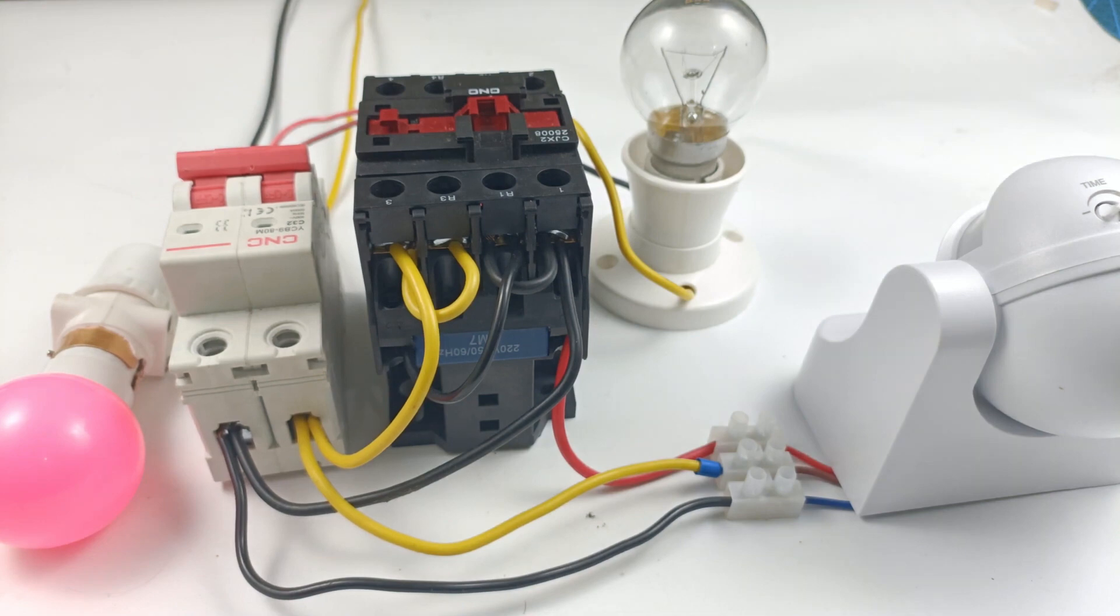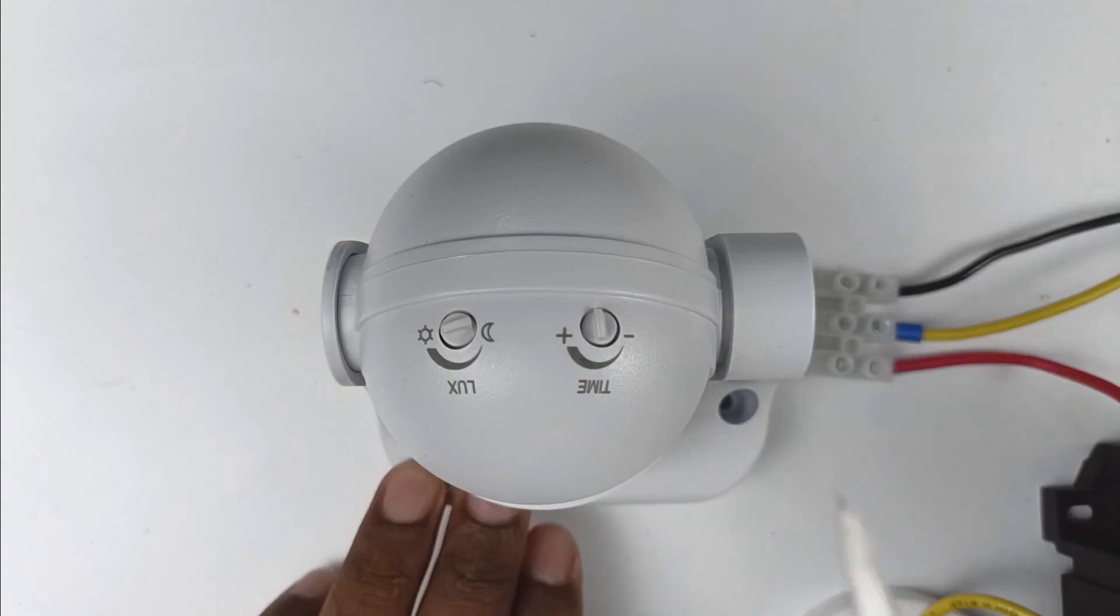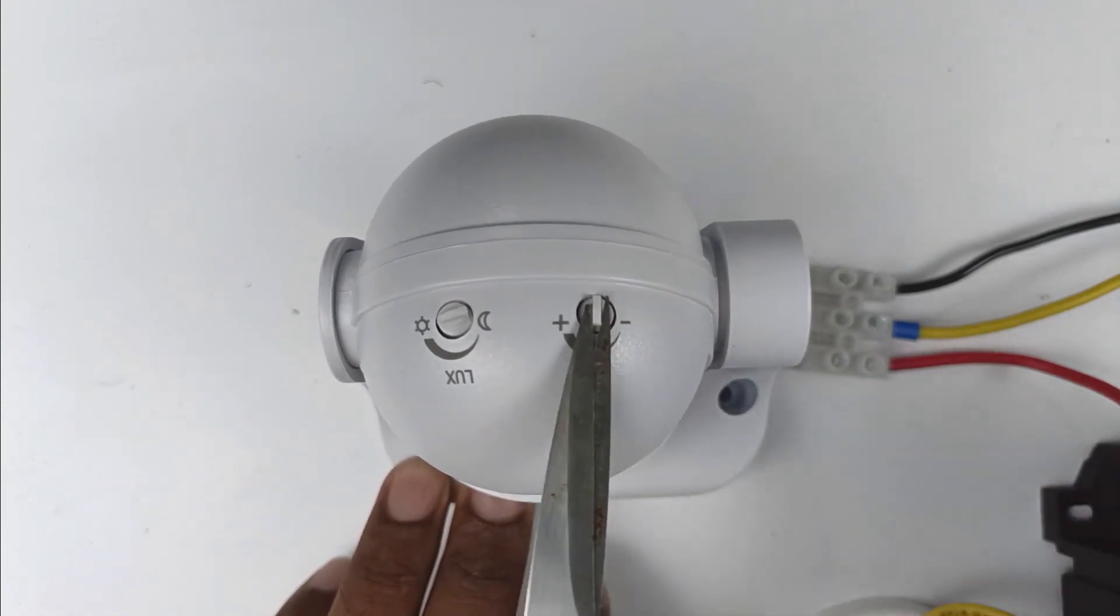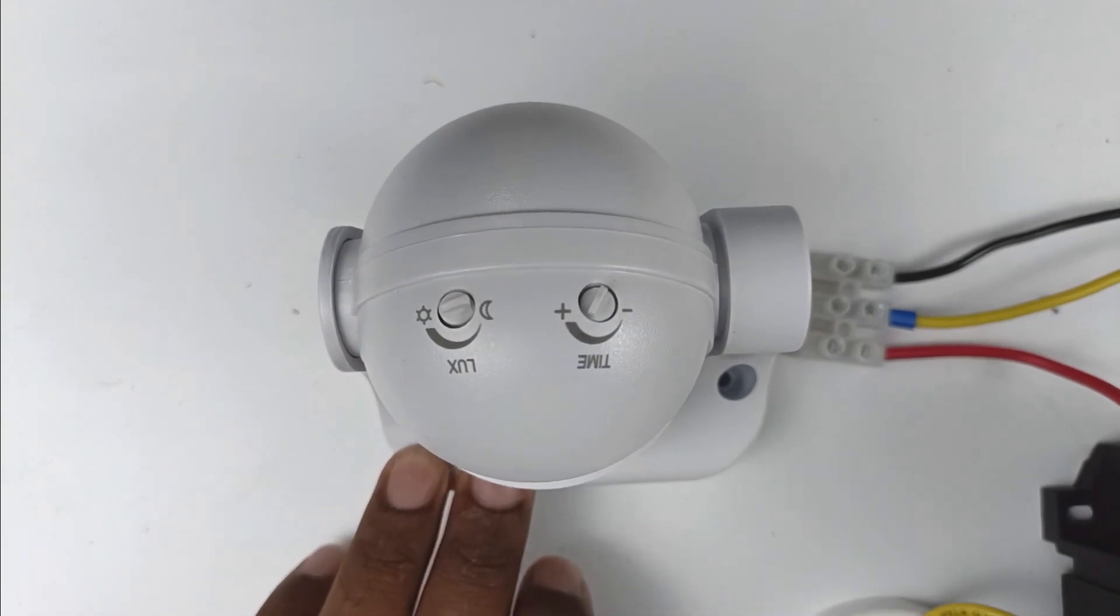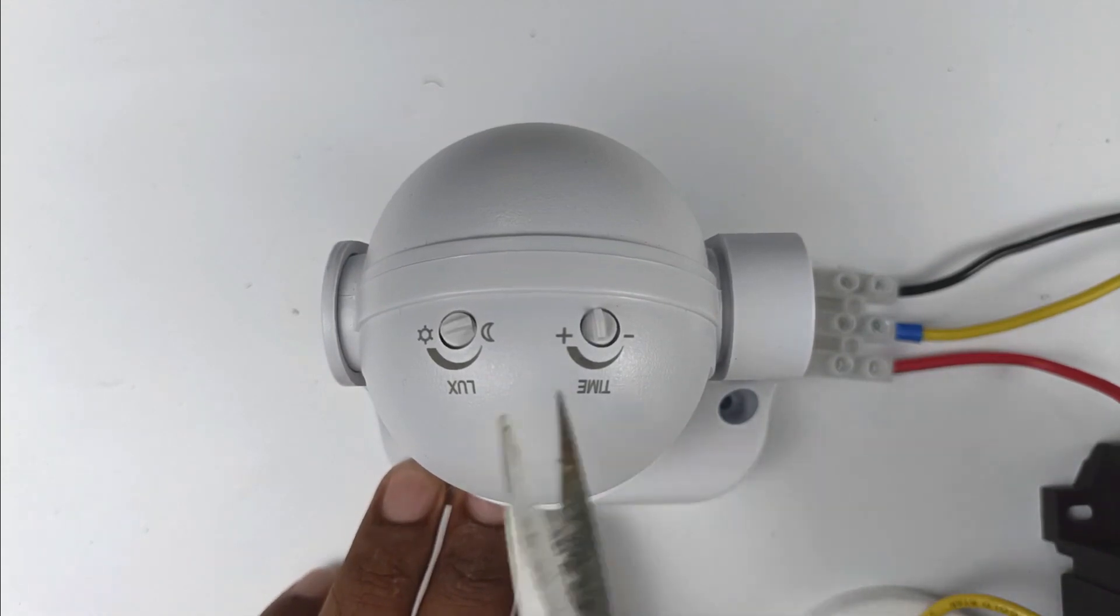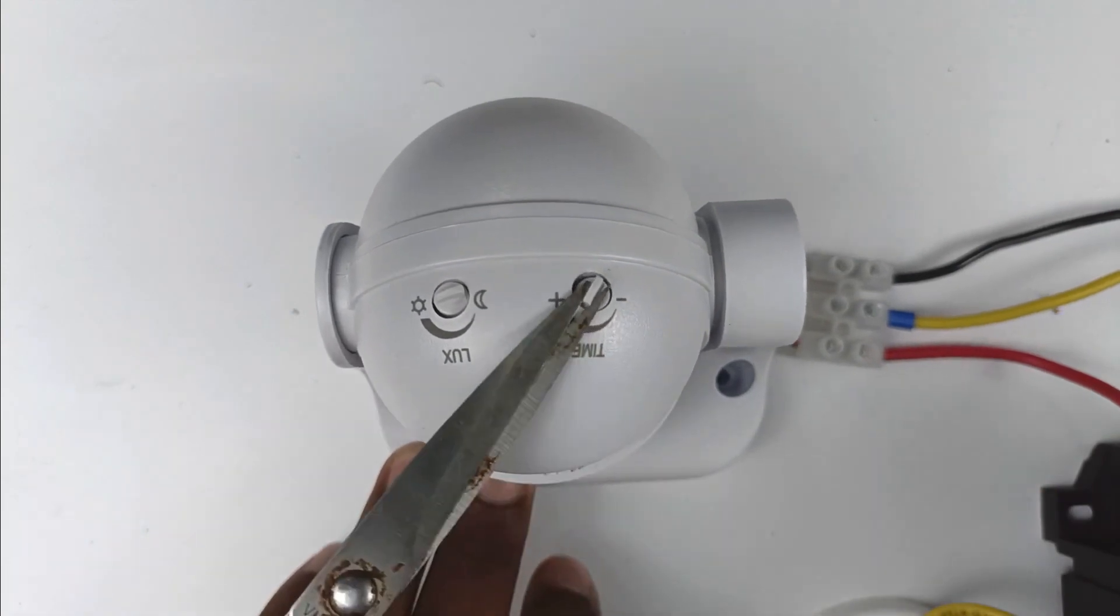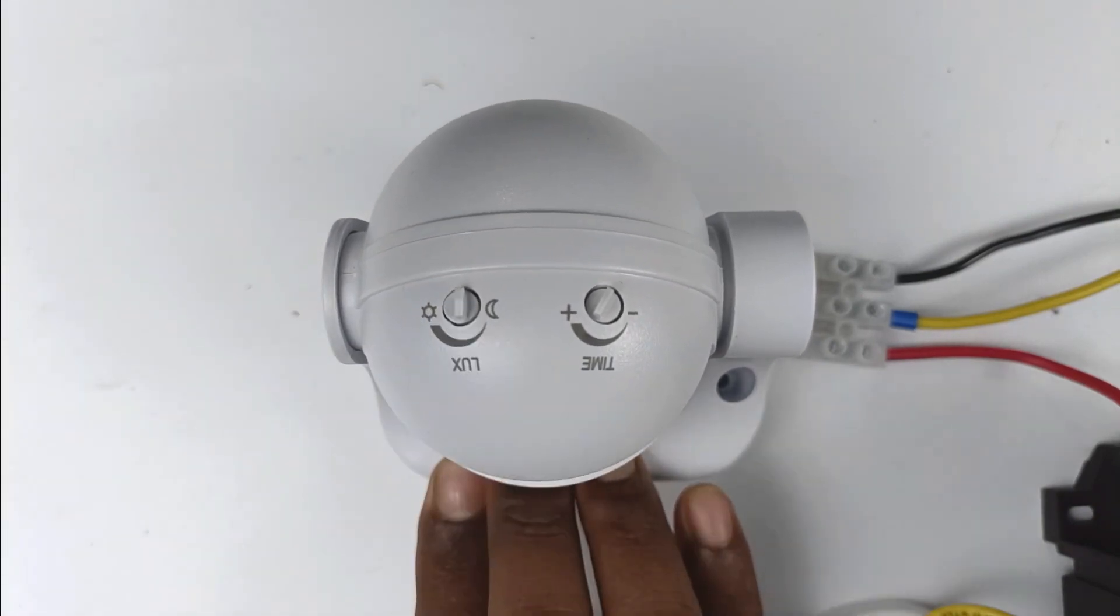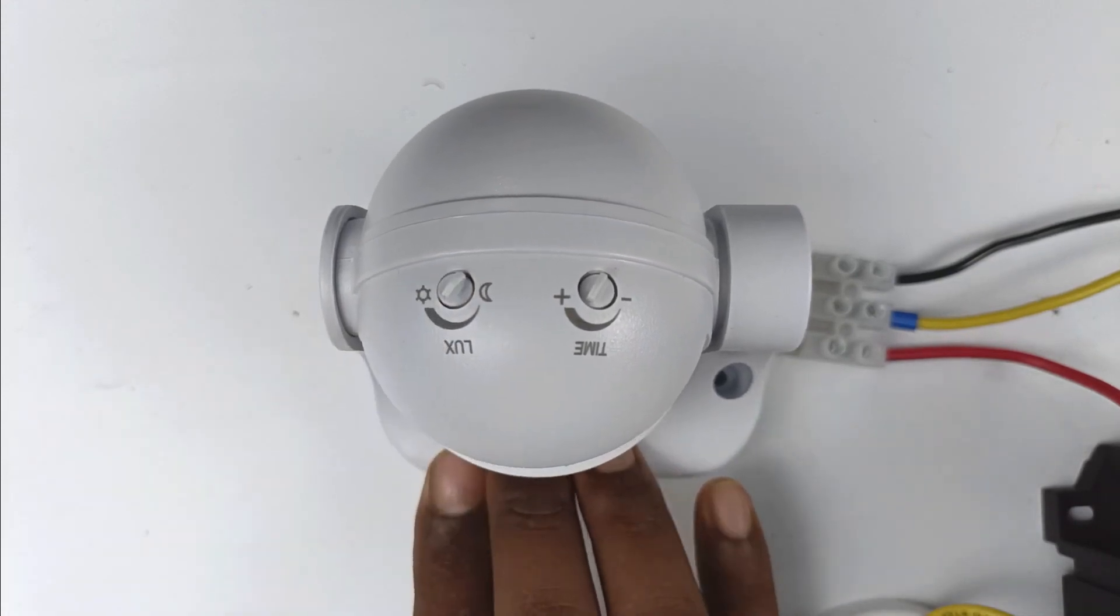So only this much connection is required. On this motion sensor I have, you can see two switches are provided. This first switch is for time delay. It means when target comes in front of the sensor and goes away, then till how much time motion sensor generates output supply, you can set this time by this switch. This means you can say that a timer is given here. How much time you want to set, you can set here by rotating the knob. Apart from this, one more switch is provided here. Through this, you can control the lux level. It means at how much brightness this motion sensor should be operated, you can do the programming through this switch here.